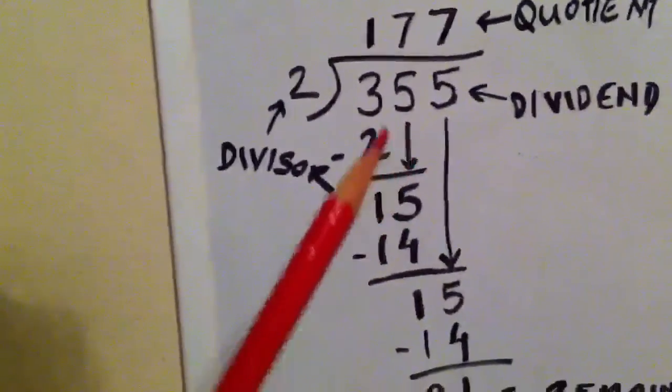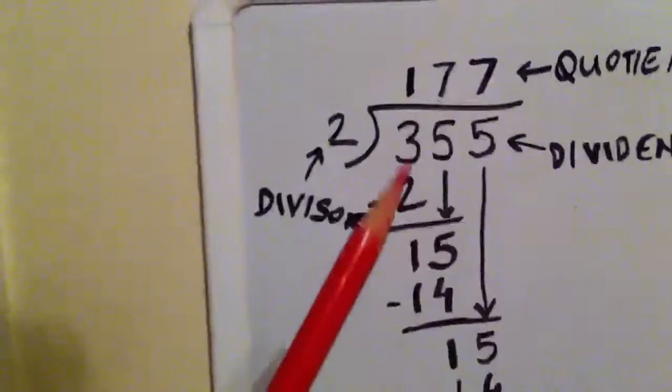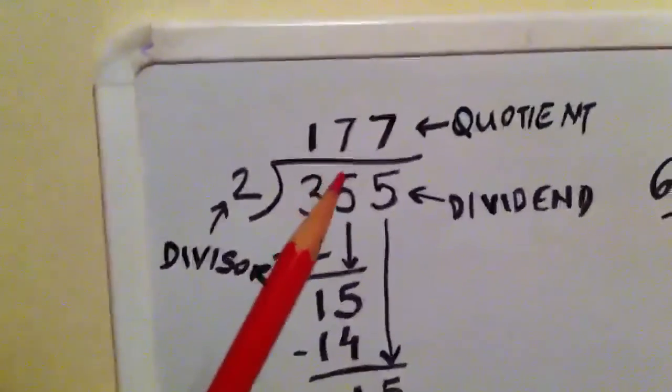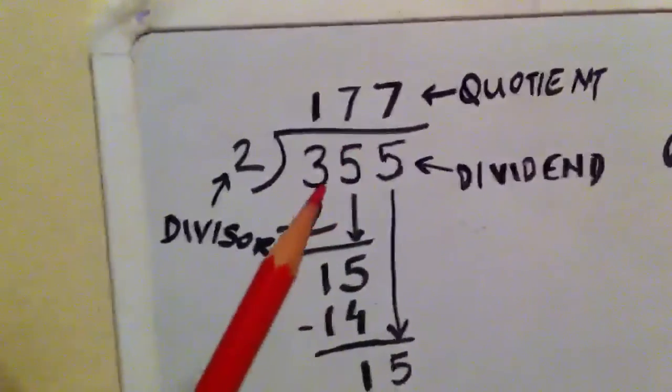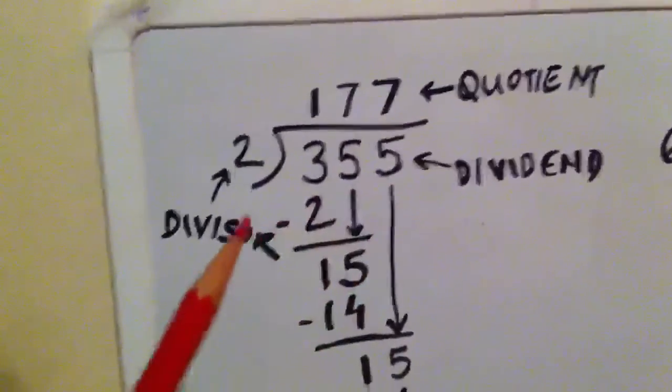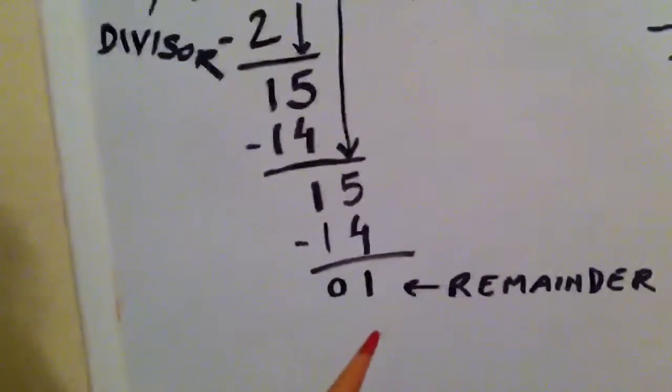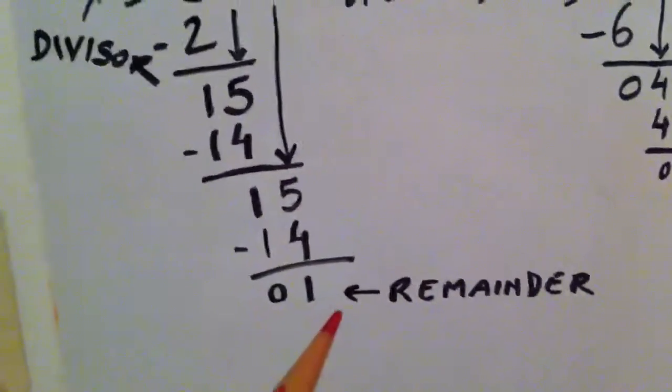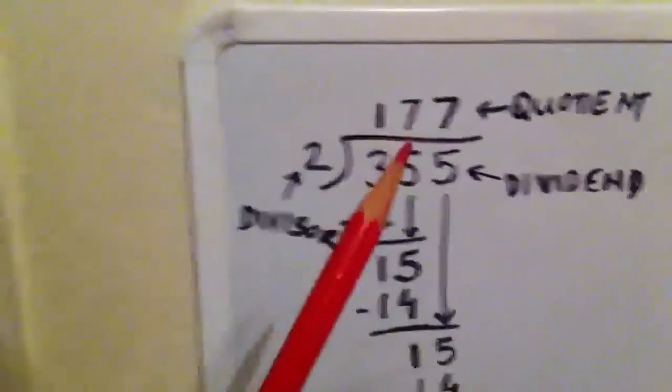And here we have the answer, or the quotient, as 177, and 355 is the dividend, 2 is the divisor, and the remainder is 1. So this was kind of a simple division. Let's look at a little bit different division over here.